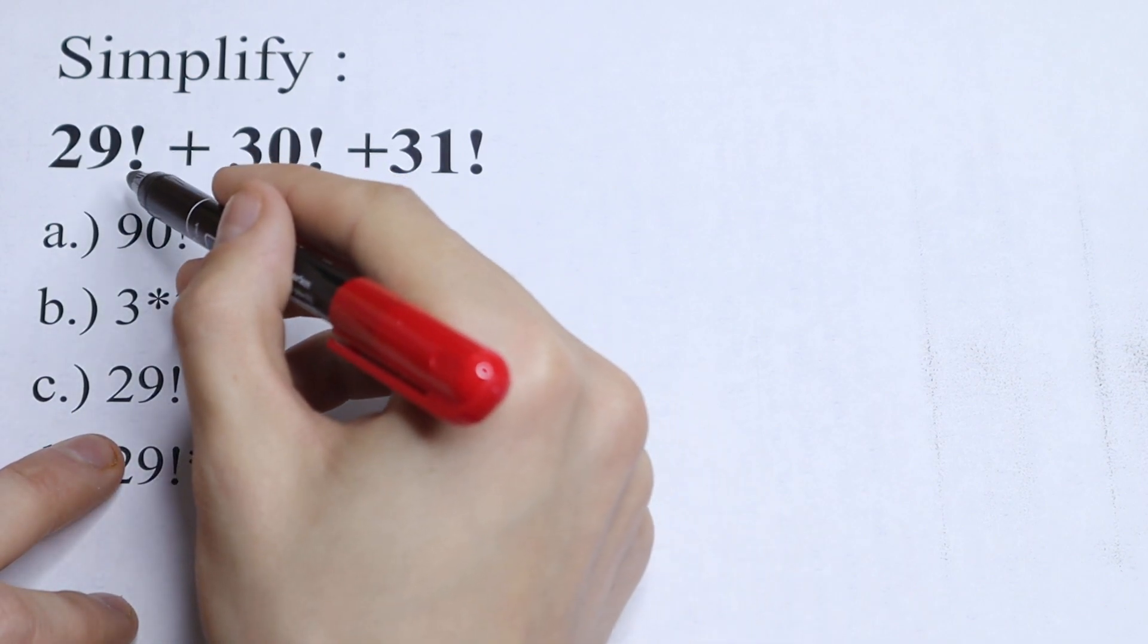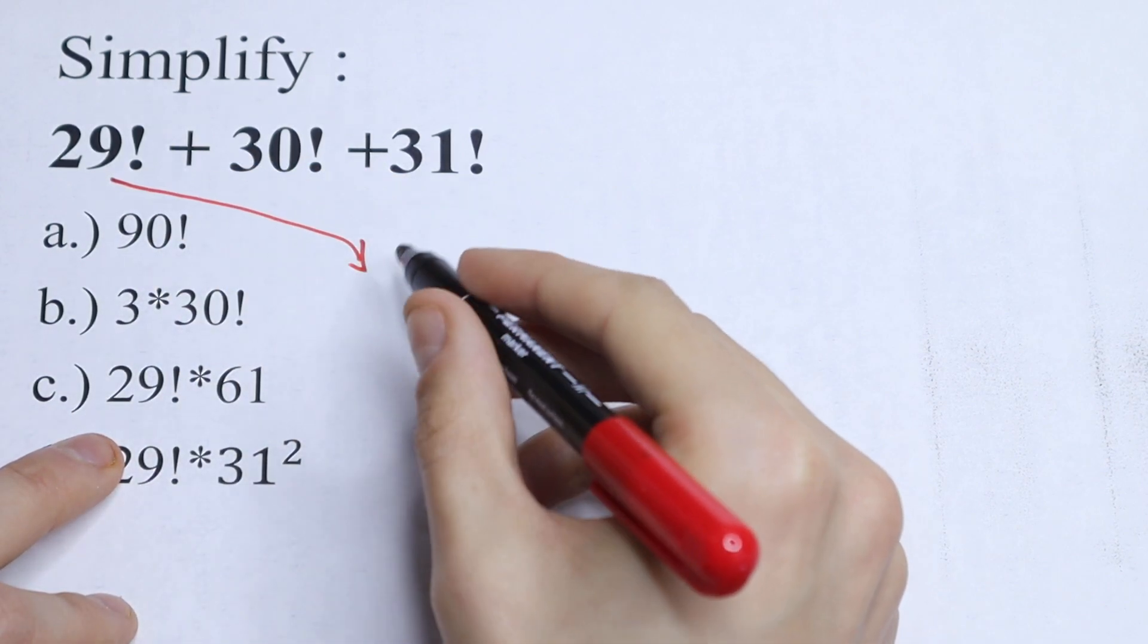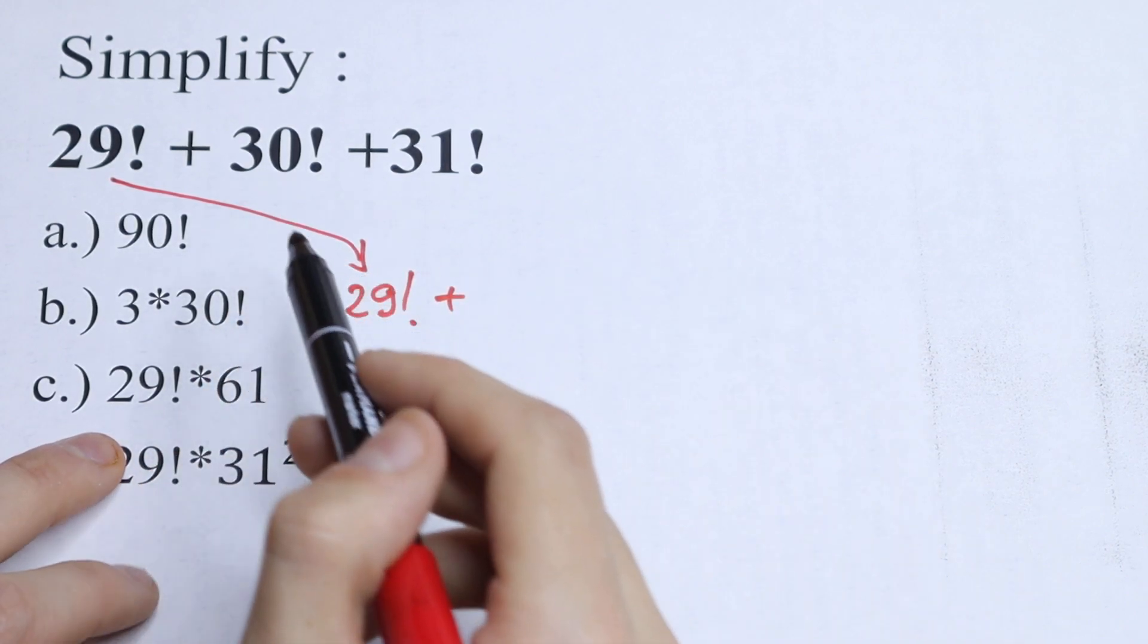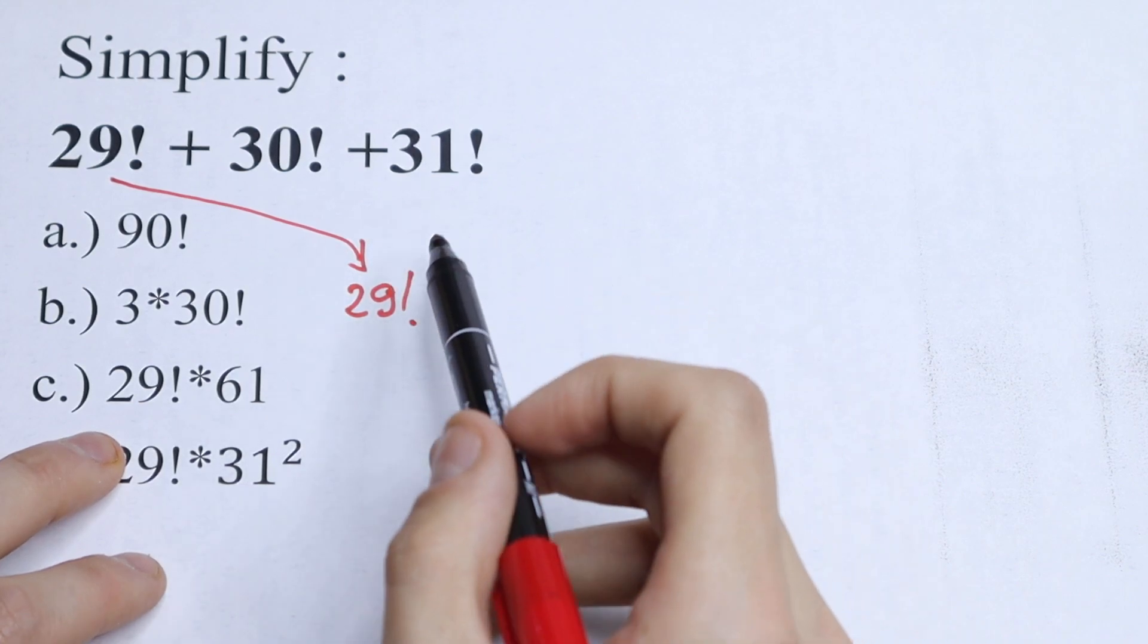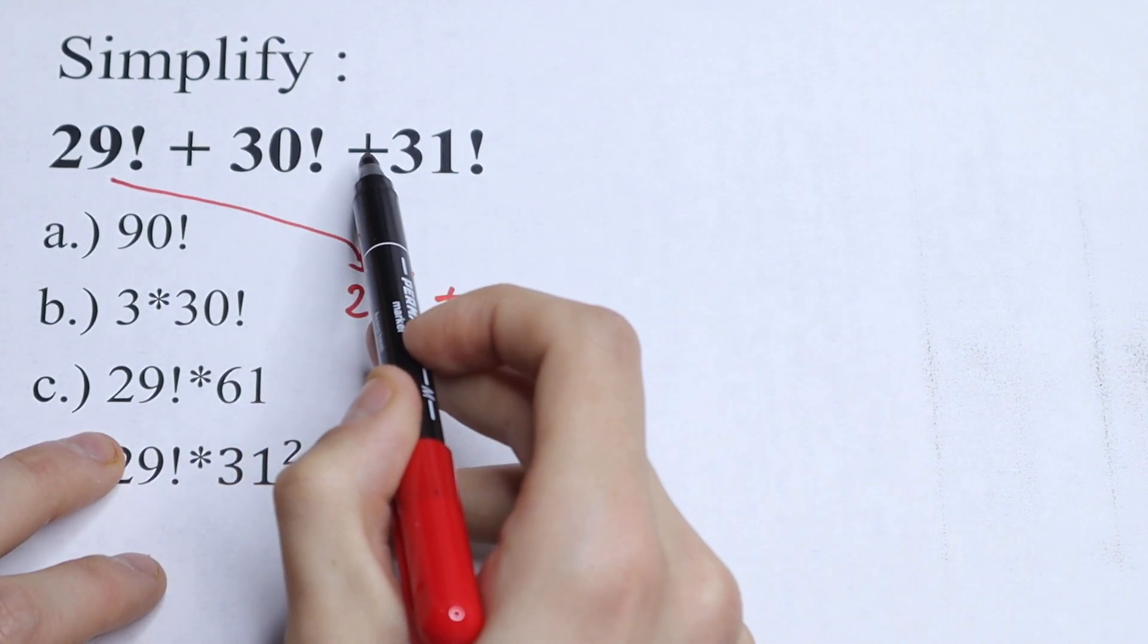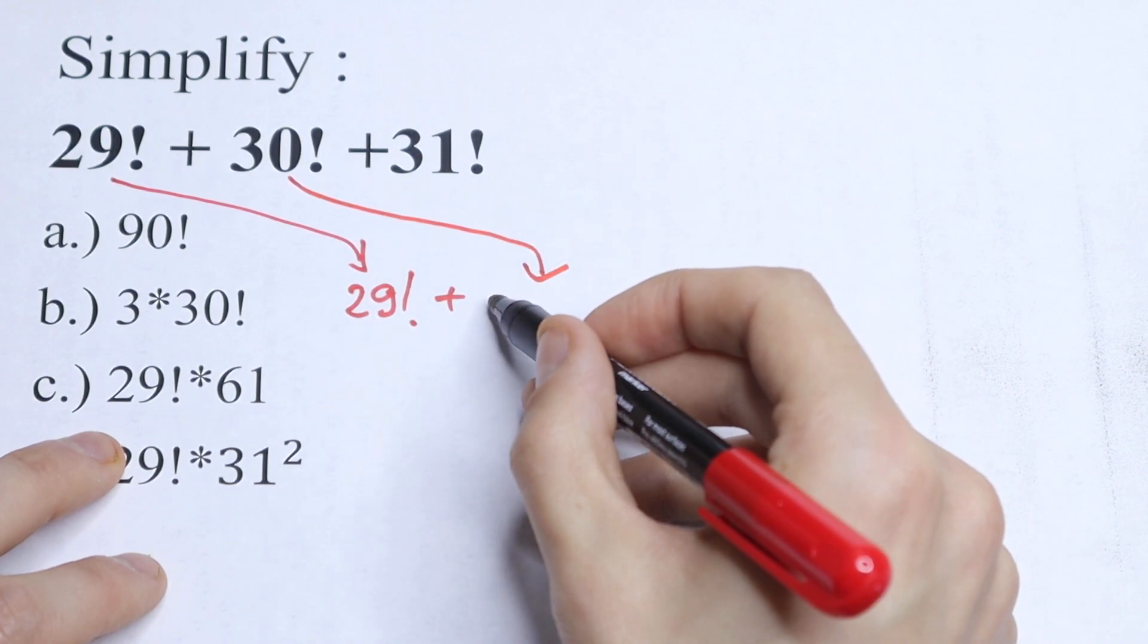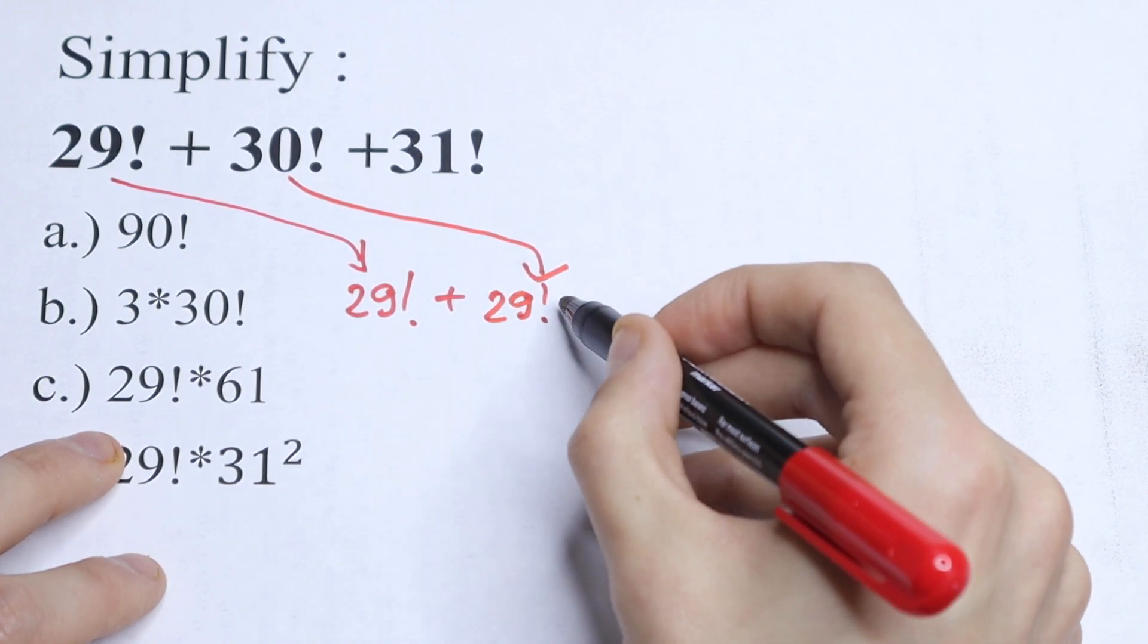29 factorial can be written as 29 factorial. But moreover, this 30 factorial we can write as, of course, this is a product from 1 to 30, but moreover we can write this 30 factorial as 29 factorial times 30.